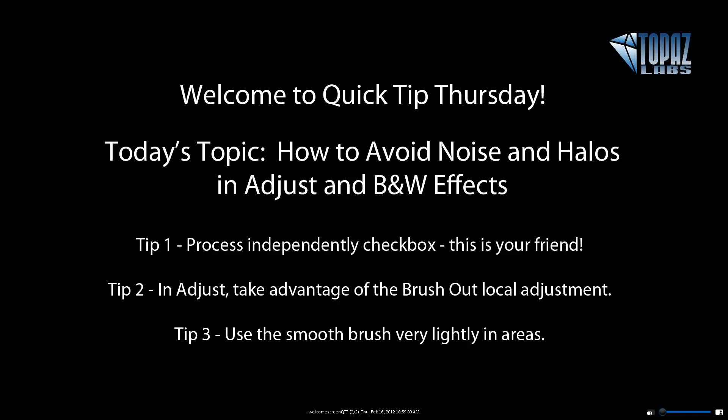The first tip is processing independently. By default, the exposure and the details are going to be processed simultaneously, so they affect each other. If you process them independently, you still get the adaptive exposure that gives you that pseudo-HDR look as you push it higher, but you process that separately from your details, so you don't get that grungy look that produces halos. This independent checkbox is in both Adjust and Black and White Effects and is one of the most useful settings.